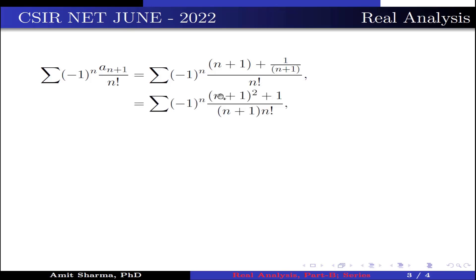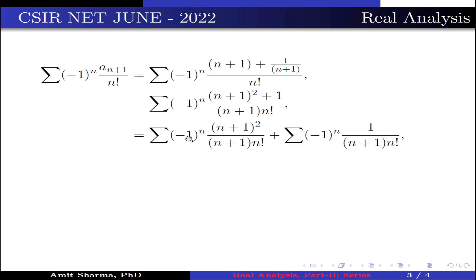Now by taking LCM, we get summation of (-1)^n · [(n+1)² + 1] divided by [(n+1) · n!]. Now separating both terms, we get summation (-1)^n · (n+1)² divided by [(n+1) · n!], plus summation (-1)^n · 1 over [(n+1) · n!]. Here (n+1) cancels with (n+1), and the denominator becomes (n+1)!.